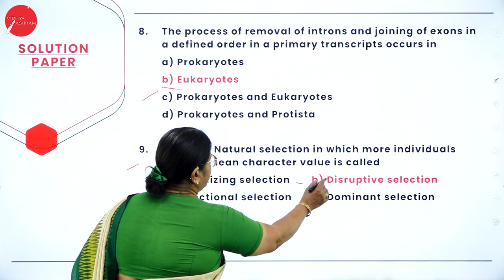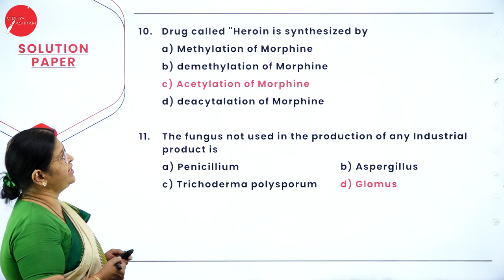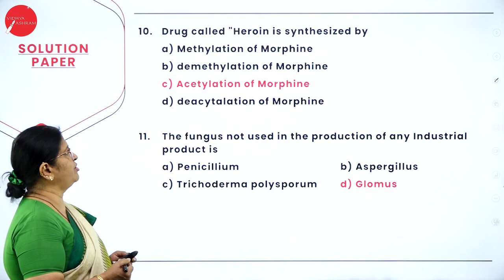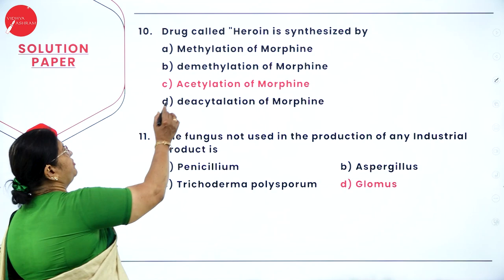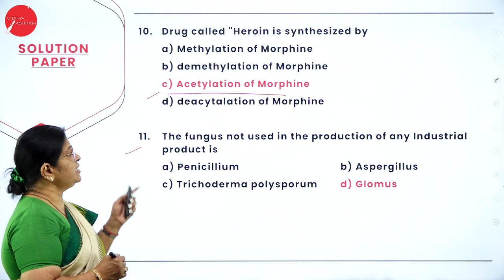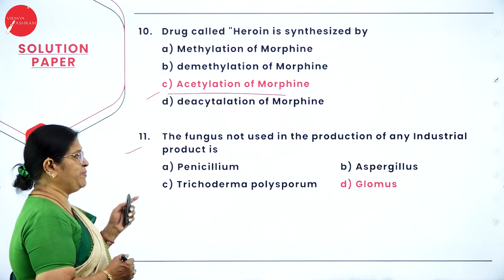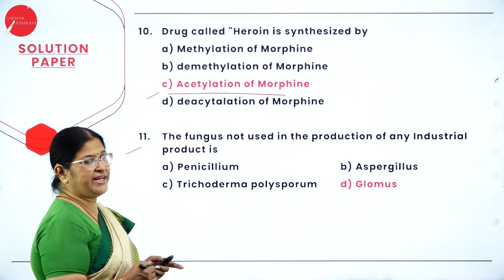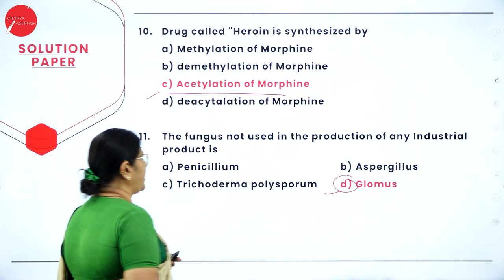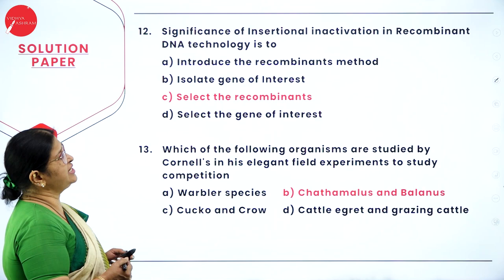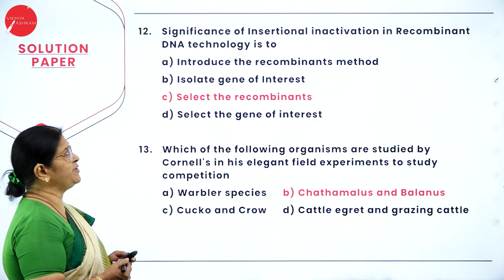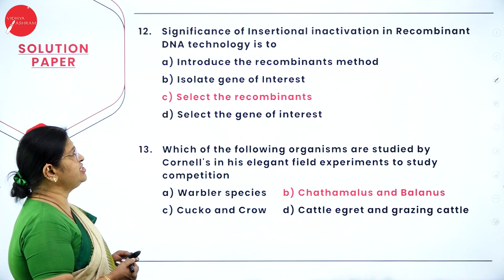Question 10: drug heroin is synthesized by — it is obtained by acetylation of morphine, so option C is correct. Question 11: the fungus not used in the production of any industrial product — option D: Glomus is the right answer. Question 12: significance of insertional inactivation in recombinant DNA technology is to — option C: select the recombinants is the right answer.